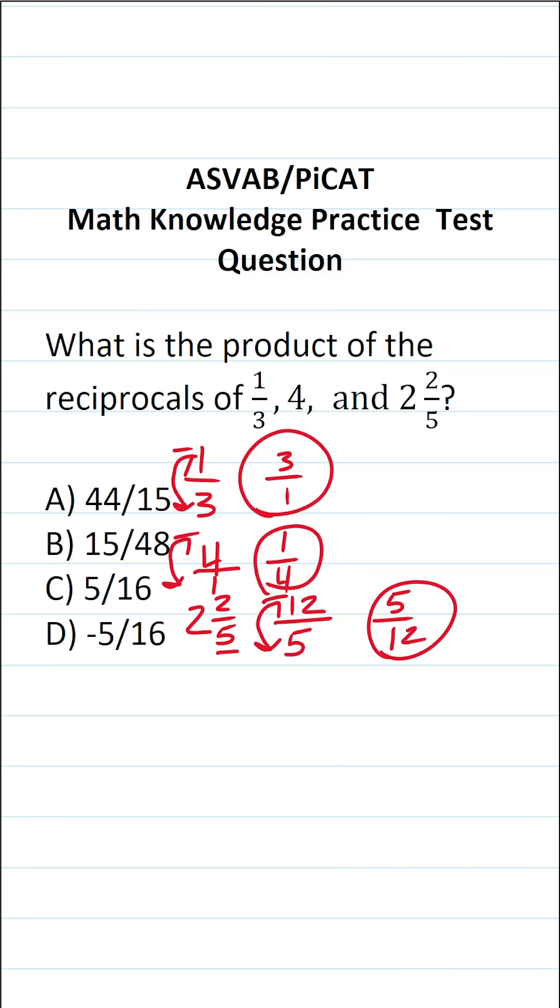Now we have to find the product of these reciprocals, and that means we're going to multiply all these together. We have three over one times one over four times five over 12.